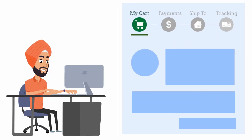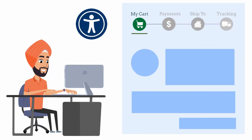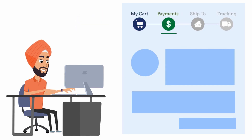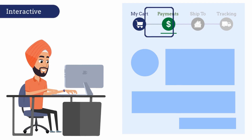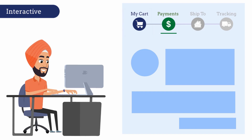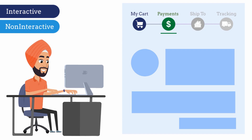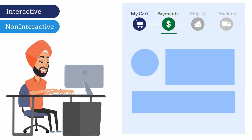Today we will make the step progress bar web accessible. The step progress bar is a very useful component that helps the user understand the progress they have made so far in a multi-step application. It can be either interactive, wherein the user can tap through and make selections to move back to completed steps just like breadcrumbs, or it can be non-interactive — read only — with its primary purpose being to indicate progress. We will be covering both in this tutorial.